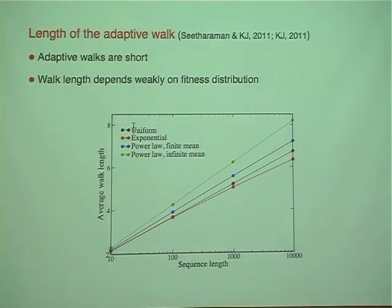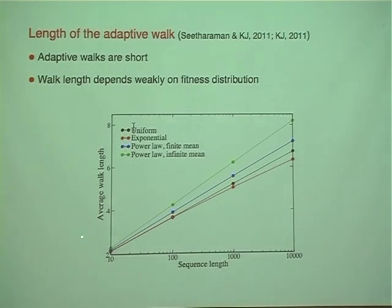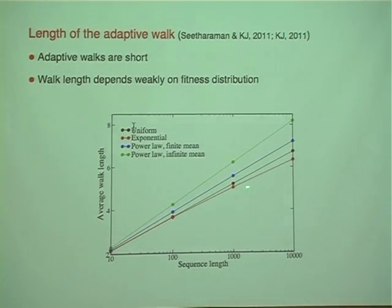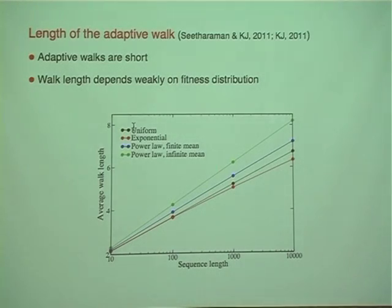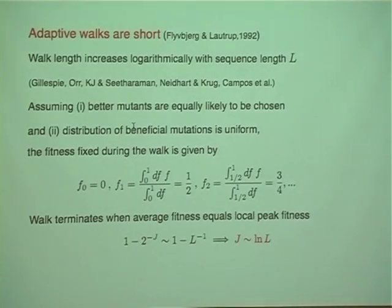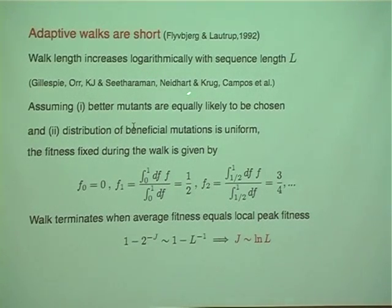The first obvious question is: what is the length of the adaptive walk — how many steps before hitting a local fitness peak? The well-known answer is that adaptive walks are short. Plotting average walk length as a function of sequence length, it increases but typical walk lengths are only about 6–8 steps. It depends weakly on the fitness distribution — whether uniform, exponential, or power-law, the numbers are similar. This is known from the work of Gillespie and Orr: walk length increases logarithmically with sequence length.